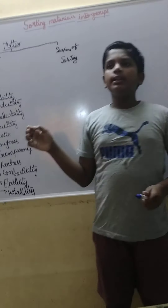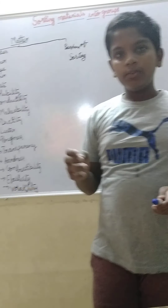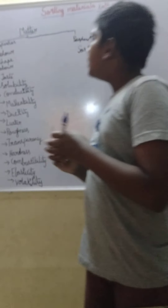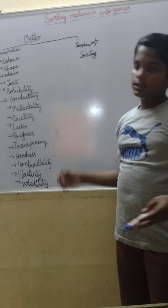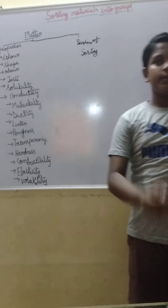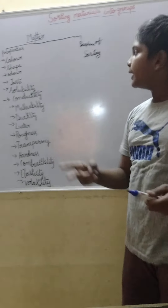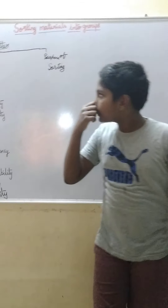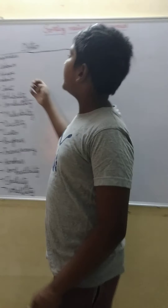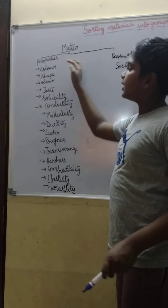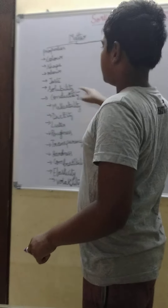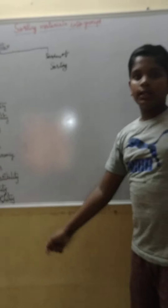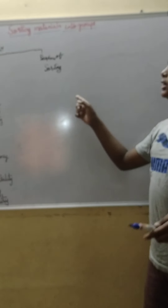If you look at any material, it has properties. Everything has a color, shape, odor, taste, etc. These are the properties of matter. But why do we sort matter?